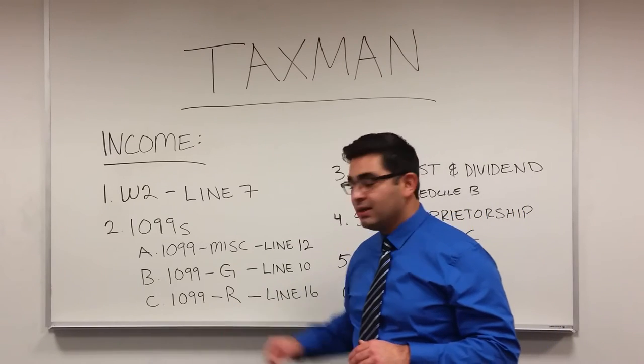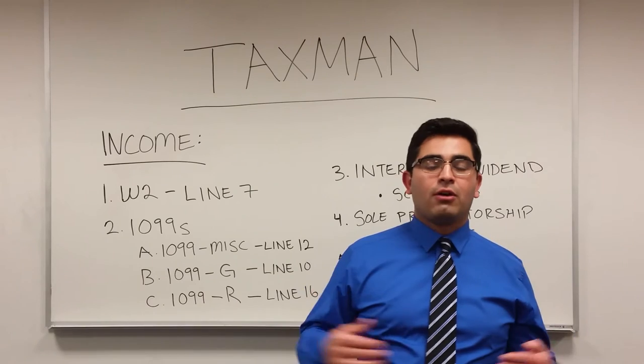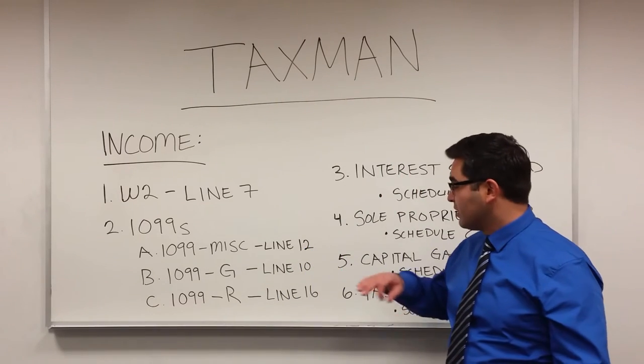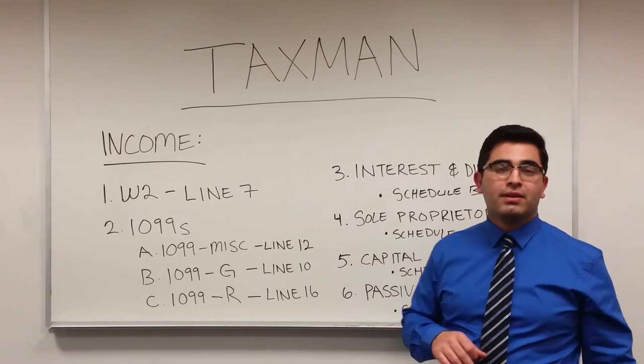Next is 1099-R. You receive a 1099-R for pensions and annuities, and that is reported on line 16 of the 1040.